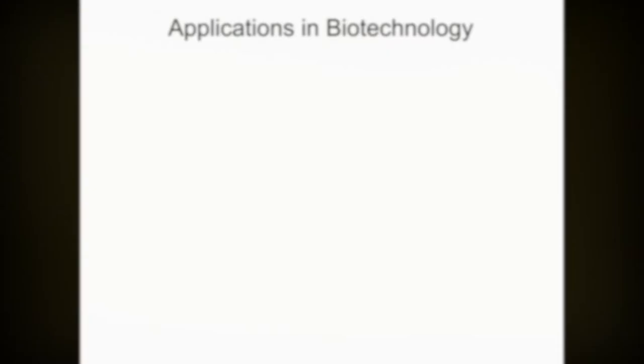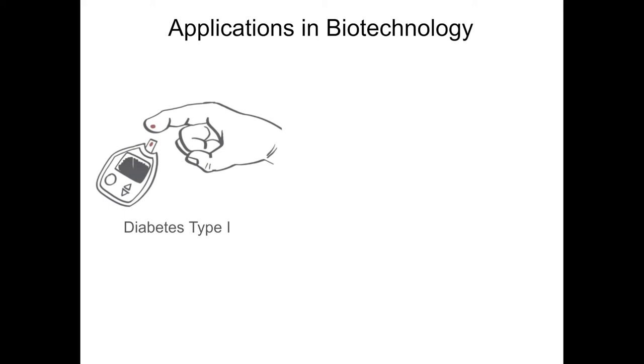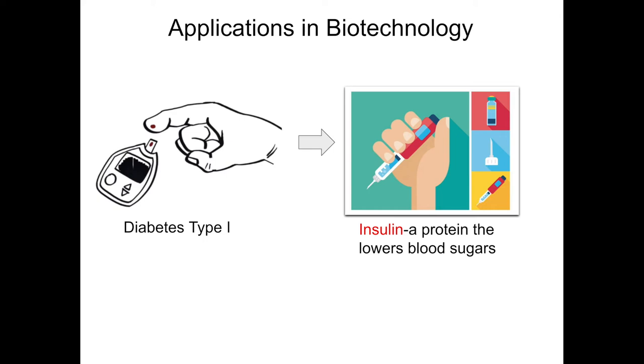Many students are somewhat familiar with diabetes and understand that if you have type 1 diabetes, you may occasionally need to give yourself insulin. We ask students where they believe this insulin comes from to show one way biotechnology can be used, but also that there are a number of different types of areas that biotech covers.